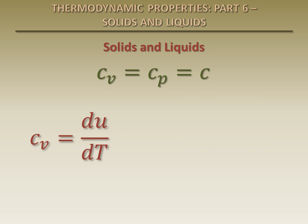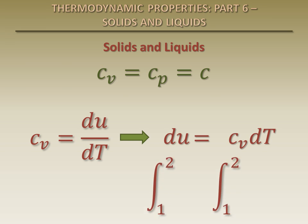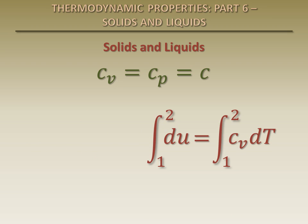This equation can be separated and integrated as follows. The integral on the left side simply becomes the change in the specific internal energy during the process. The specific heat at constant volume becomes the specific heat.